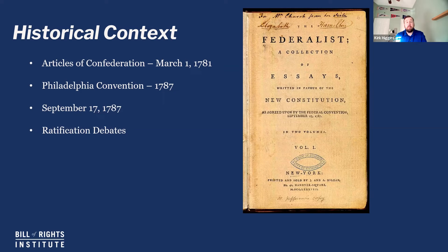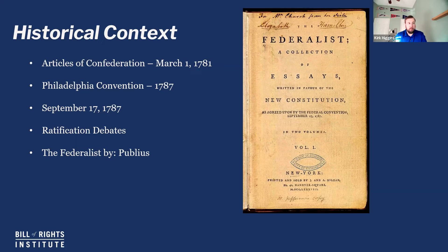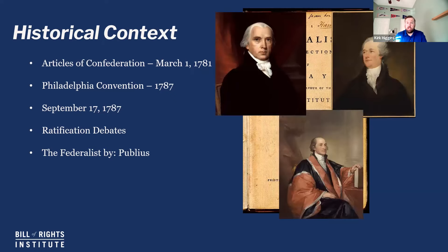Those debates weren't going to be the same in every state. Some states were very eager to approve it; others were not. One of the states that those in favor of the constitution — known as the Federalists — thought was going to be a challenge was New York. So in New York, a group of three men got together and decided to write a series of essays that are now called the Federalist Papers. Those men were James Madison, Alexander Hamilton, and John Jay.